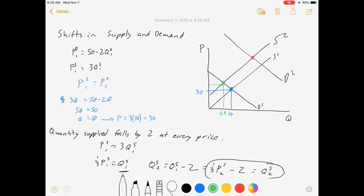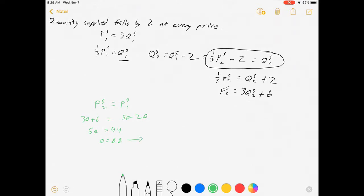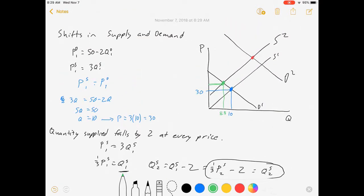Now we need its price. Substitute 8.8 into either function. Let's do the new supply function just for fun. P is equal to 3 times q, 8.8 plus 6, which is equal to 32.4. We've got our increase in price.